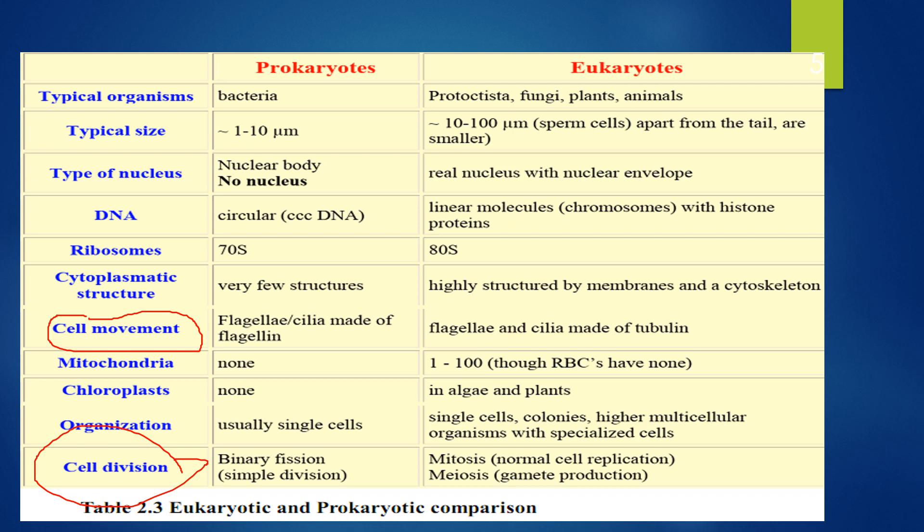Binary fission is used in Prokaryotes. When we come to Eukaryotes, they divide first by mitosis, which is normal cell replication, and also by meiosis in gamete production. Meiosis is sexual reproduction. Mitosis is called normal cell replication, and meiosis is involved in gamete production — this is sexual reproduction by meiosis.